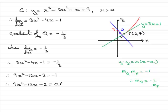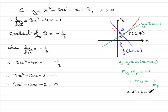We have to show that the x-coordinate of Q is 1 third bracket 2 plus root 6. Having an answer like this suggests this quadratic equation is not going to factorise. So we solve it using the quadratic formula. If ax² plus bx plus c equals 0, then x equals minus b plus or minus the square root of b² minus 4ac, all divided by 2a.